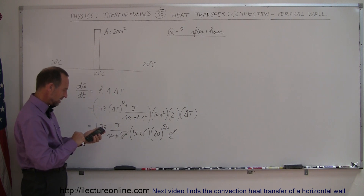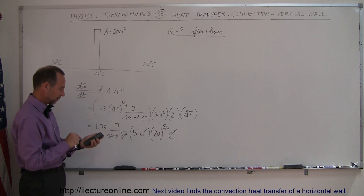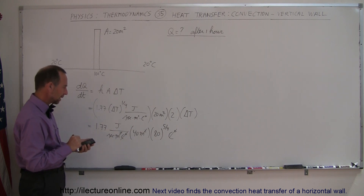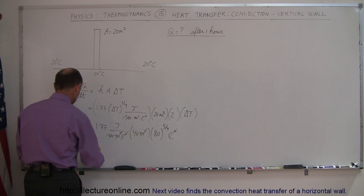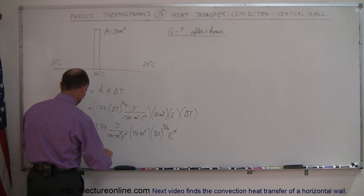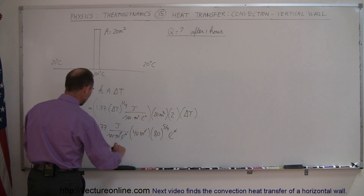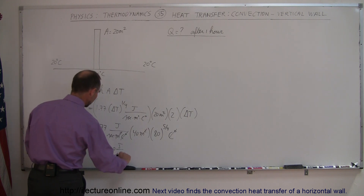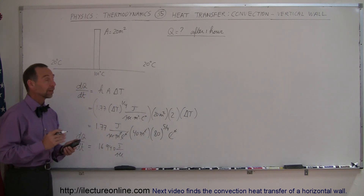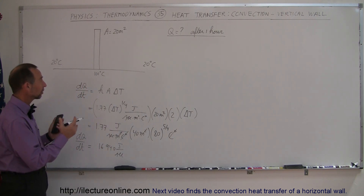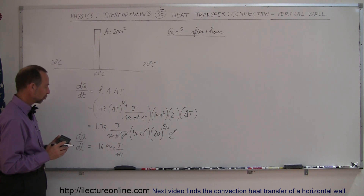With a calculator, we find 80 raised to the 5/4 power equals 239, times 40, times 1.77 — and we get a heat loss of 16,940 joules per second. That's the dQ/dt being lost by the wall: 20 square meters on each side due to the 80 degree centigrade temperature difference.